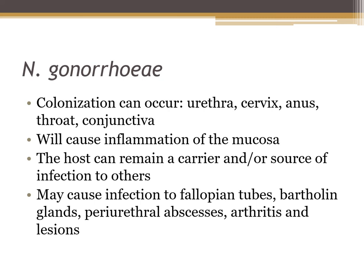Neisseria gonorrhoeae is a pathogen that can colonize the urethra, cervix, anus, throat, and conjunctiva. It can colonize a mother's vagina or cervix and be passed to the baby during birth through the birth canal, potentially causing neonatal blindness. It causes inflammation of the mucosa, and the host can remain a carrier. This may lead to infections of the fallopian tubes, the Bartholin glands, periurethral abscesses, arthritis, and lesions.